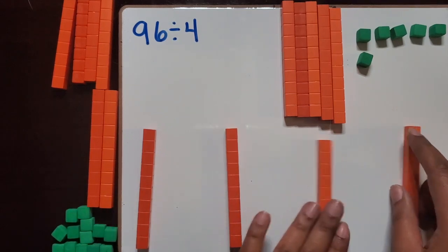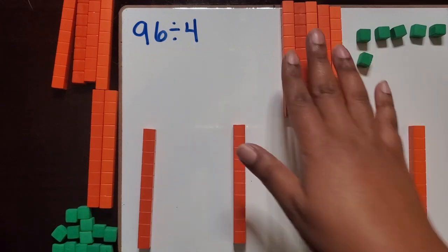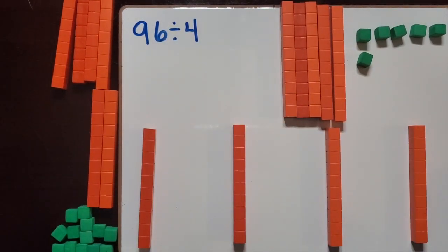So here we've created 4 groups. Each of them have a ten. So now are there enough tens to place into those four groups again equally?